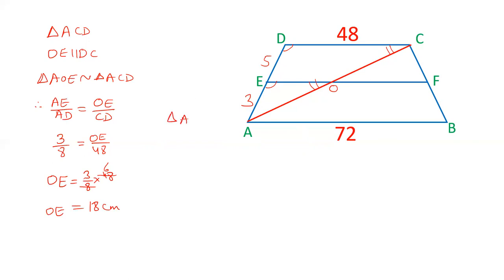Now let's take triangle ABC. In triangle ABC, OF is parallel to AB. Therefore, angle COF and CAB are equal. Angle CFO and CBA are equal. Triangle COF is similar to triangle CAB.